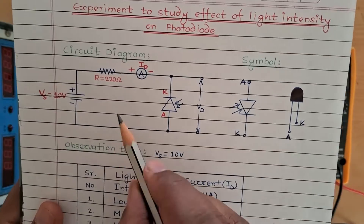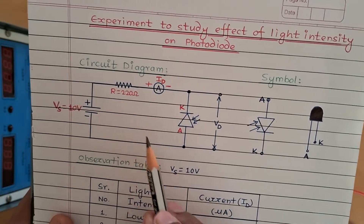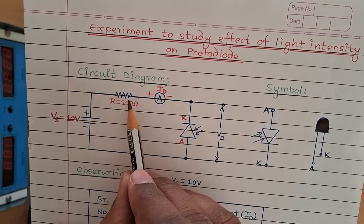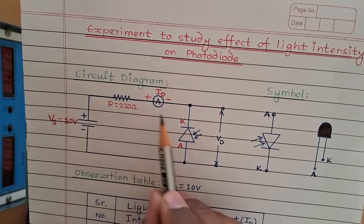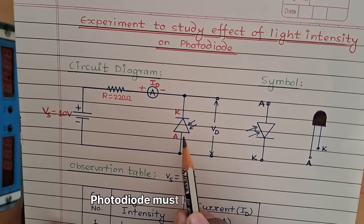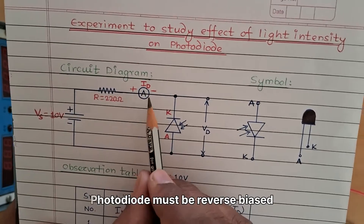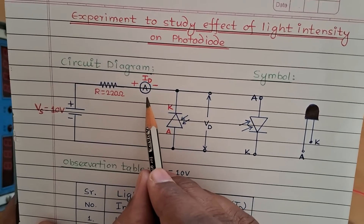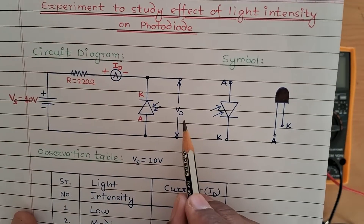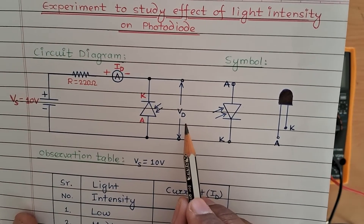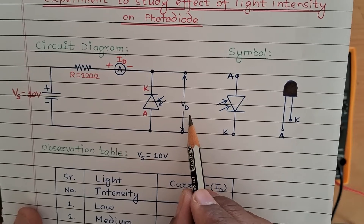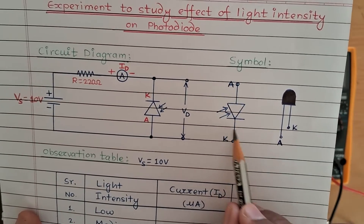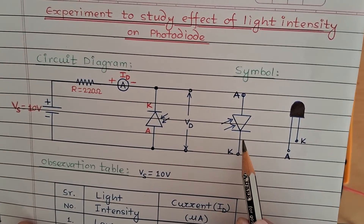The circuit diagram is very simple — it only consists of a power supply, a current limiting resistor, and a photodiode. In order to measure the current flowing through the photodiode we will need an ammeter. You can also check the voltage of the photodiode, but it is not needed.